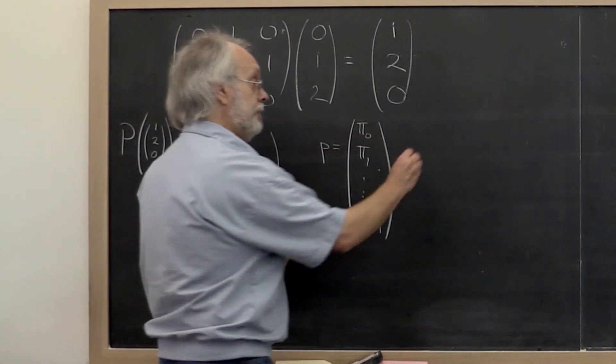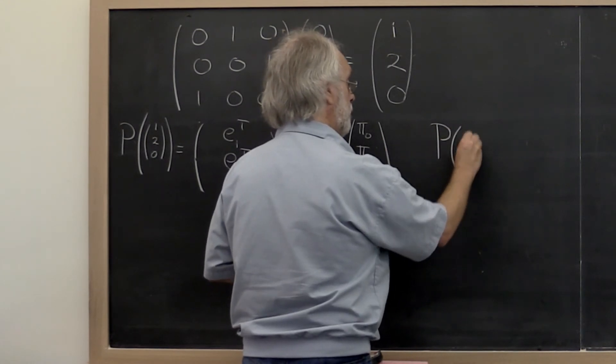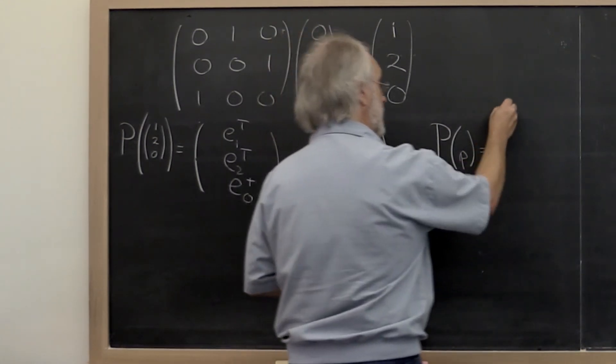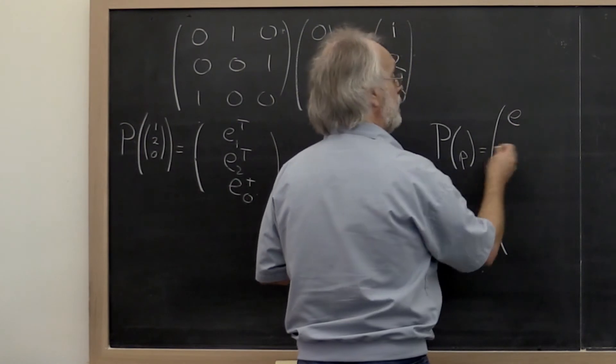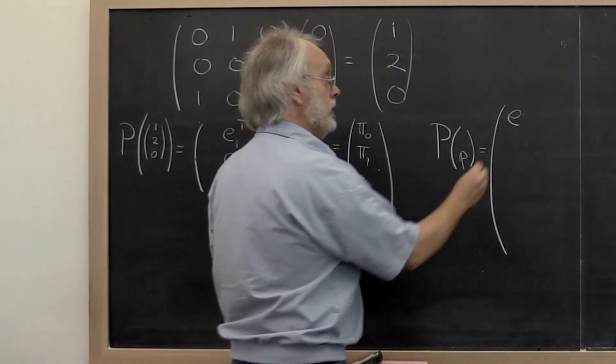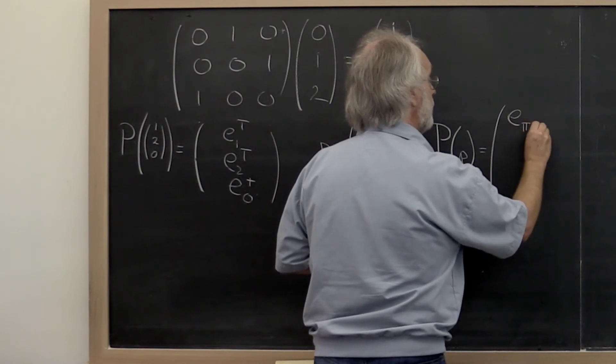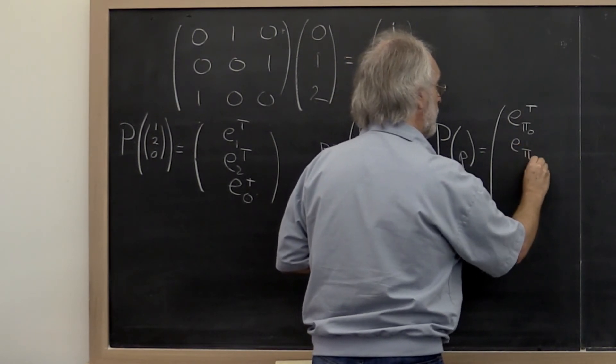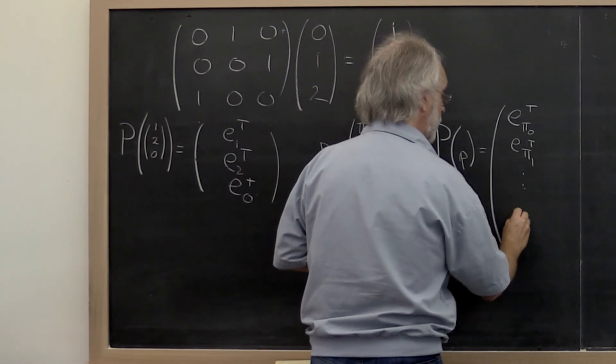Then we define the permutation matrix P(π) to be the matrix where the first row is the standard basis vector indexed with π₀, then indexed with π₁, and so forth.